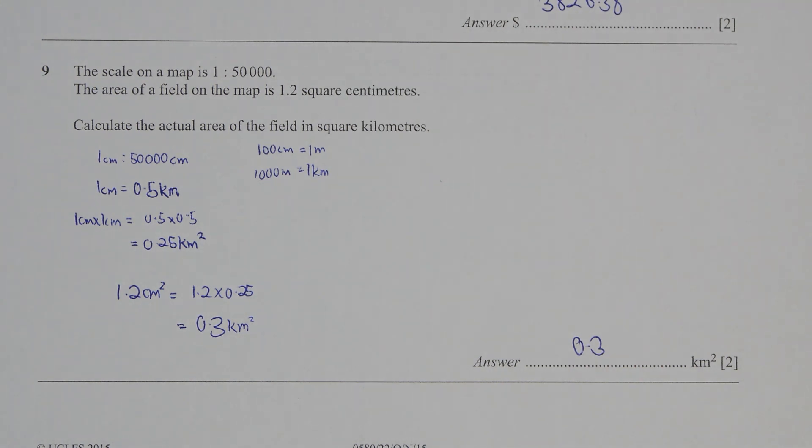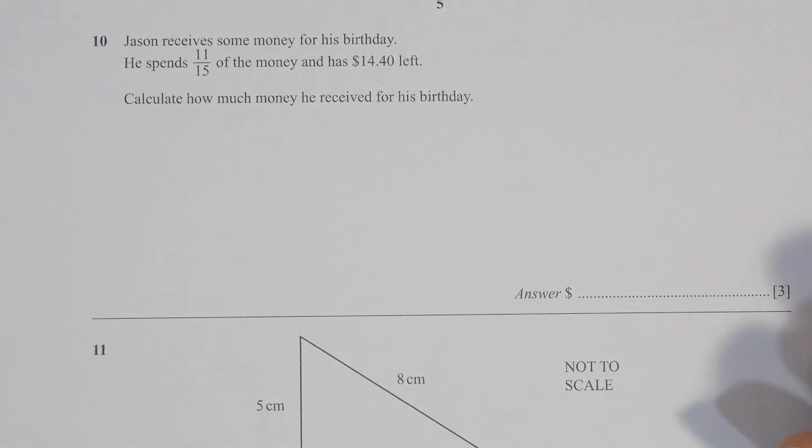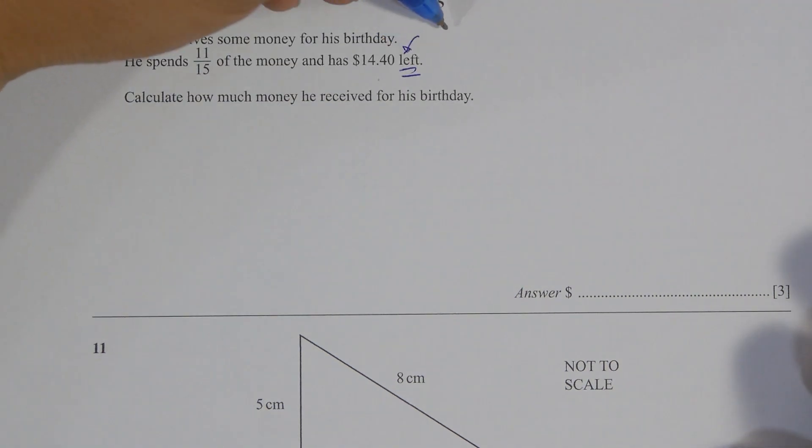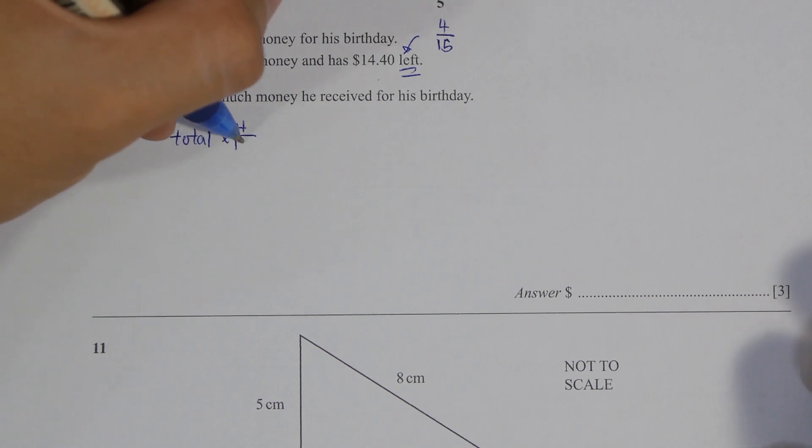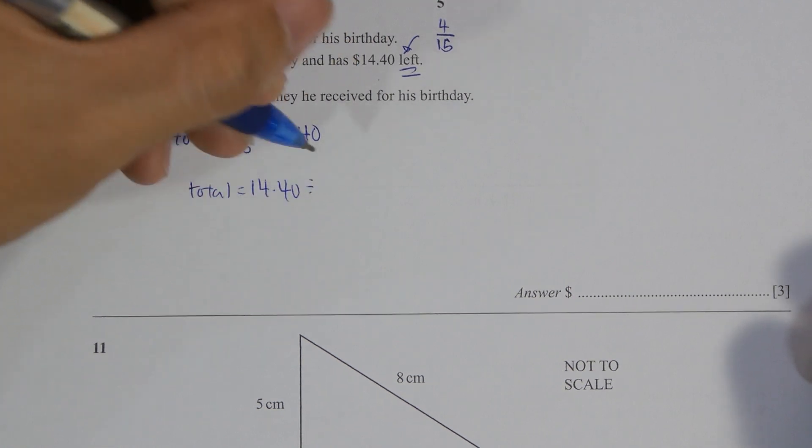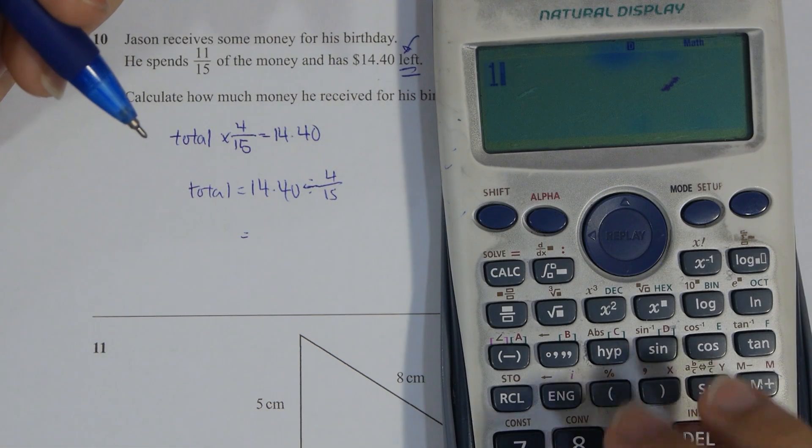For question 10, Jason received some money on his birthday, spent 11 over 15 of the money and left with 14.4. So this 14.4 is actually 4 over 15 of the total. So for you to find the total, simply take 14.4 divided by 4 over 15. So results will actually be 54.